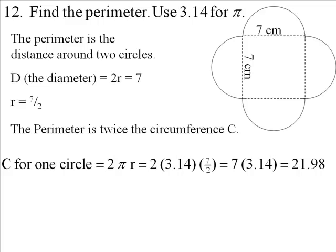That's going to be 2 times pi times R, and there's pi, and there's R. But if I do 2 times 7 halves, I'm going to get 7 anyway. So this is the diameter times pi. The diameter times pi is going to be 21.98. This is the perimeter of one circle. It's the circumference of one circle.